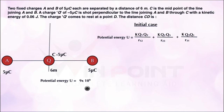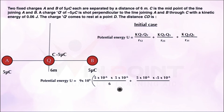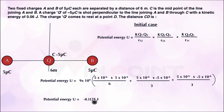Potential energy U = 9×10⁹ × [ (5×10⁻⁶ × 5×10⁻⁶) / 6 + (5×10⁻⁶ × (−5×10⁻⁶)) / 3 + (5×10⁻⁶ × (−5×10⁻⁶)) / 3 ]. The distance between q1 and q2 is 6 m, and the distance between q2 and q3 and between q1 and q3 is 3 m each, since C is the midpoint. Solving everything, the potential energy U equals minus 0.1125 joules.